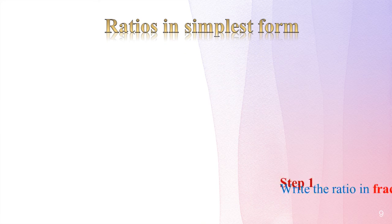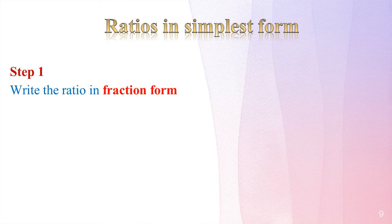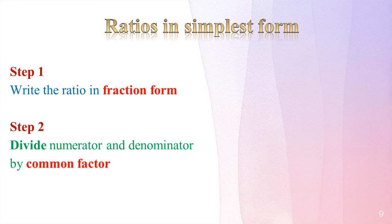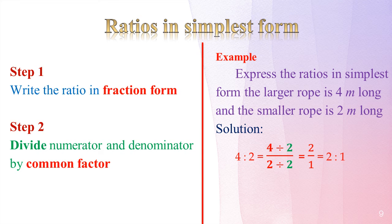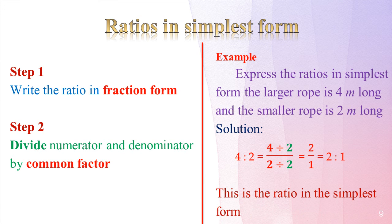Ratio in simplest form. Step one: write the ratio in fraction form. Step two: divide the numerator and denominator by the common factor. For example, a larger rope is 4 metres long and a smaller rope is 2 metres long. Write 4 is to 2, convert to fraction 4/2, divide numerator and denominator by the common factor 2, giving 2/1. So the simplest form is 2 is to 1.